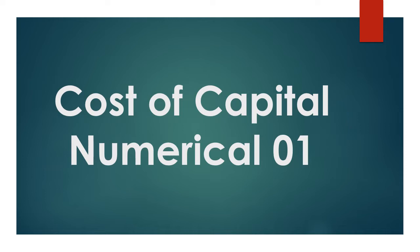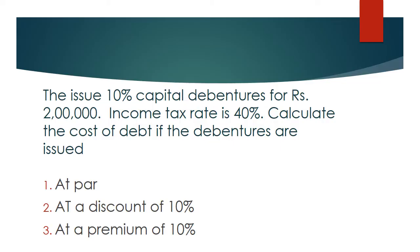Let us see how we can calculate the cost of capital for each type of capital one by one. In the first example, we are going to look at the cost of debt at different par values. The numerical is: issue 10% capital debenture for Rs. 2,00,000. Yes, there is an issue of debentures total worth of 2 lakh rupees at 10% rate of interest.